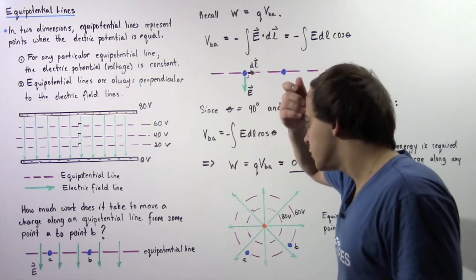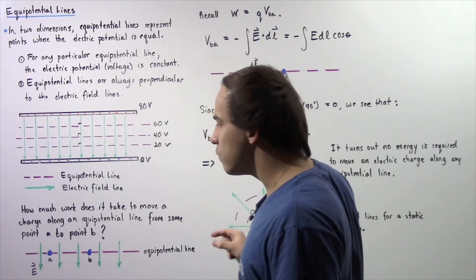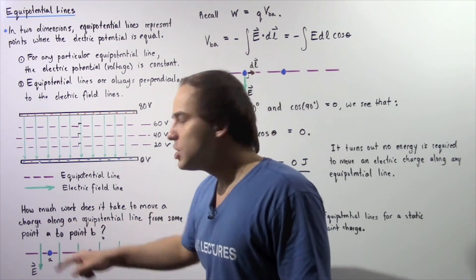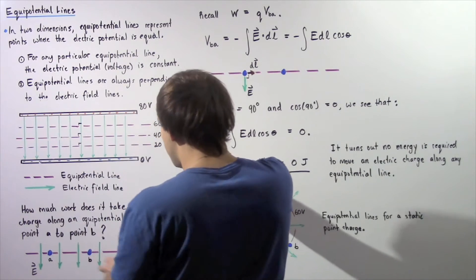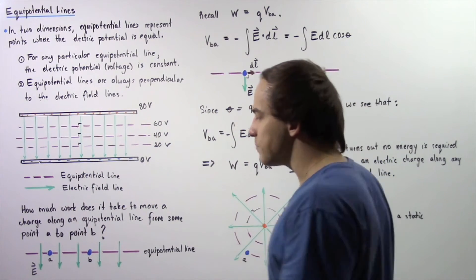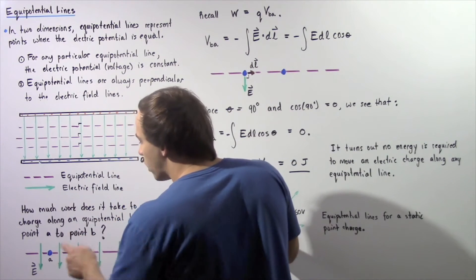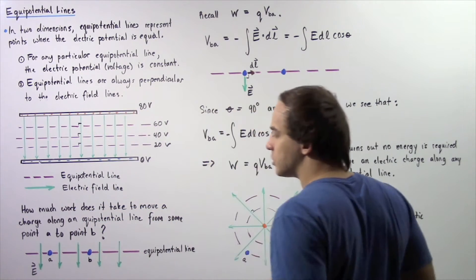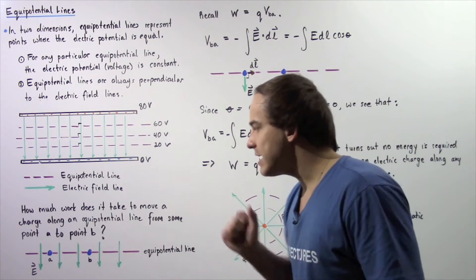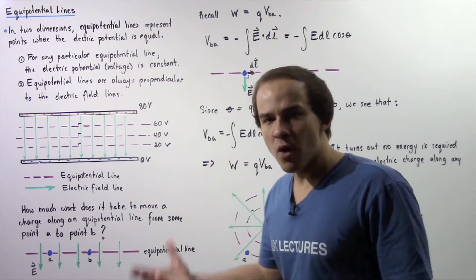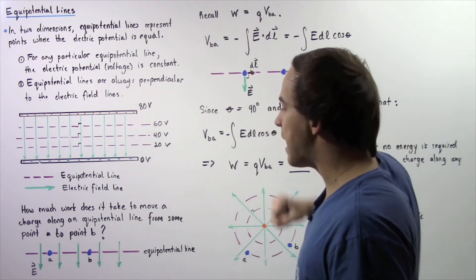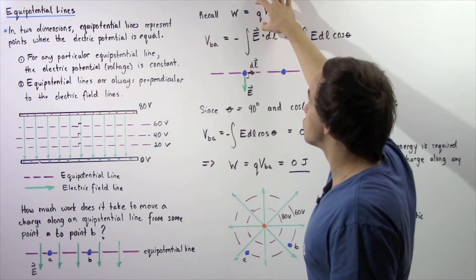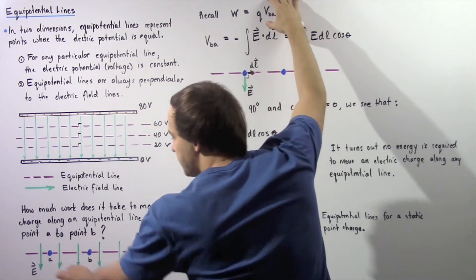Now we want to explore the following question: how much work does it take to move a single point electric charge along an Equipotential Line from some point A to some point B? To calculate the amount of work required, we have to recall the equation for work in terms of our voltage and our charge. The work required is equal to the product of the electric charge and the voltage difference between point B and point A.